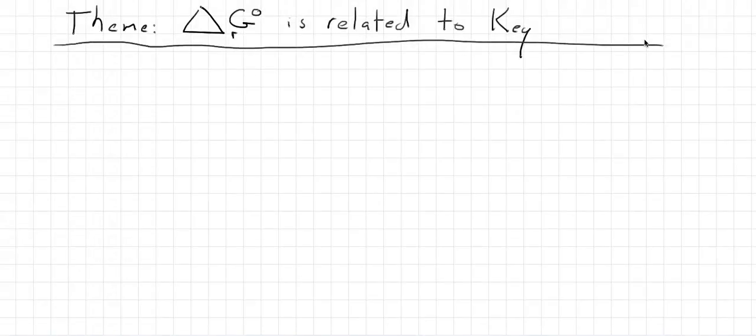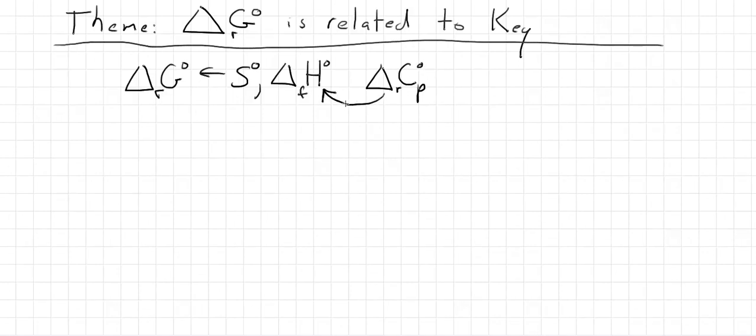We've spent a lot of time over the last few weeks learning about delta G standard, and you were able to calculate delta G standard for reactions from the third law entropy of the products and reactants, the delta H's of formation of the products and reactants. You were able to use heat capacity data, or rather the delta Cp data for a reaction, to see how these things were affected by temperature. The bottom line is that you're able to calculate delta G standard for reactions at a variety of temperatures.